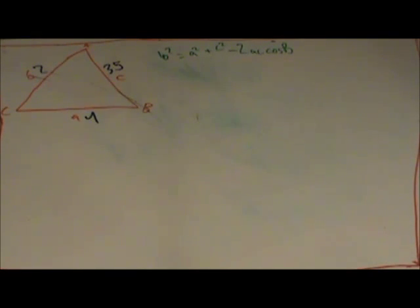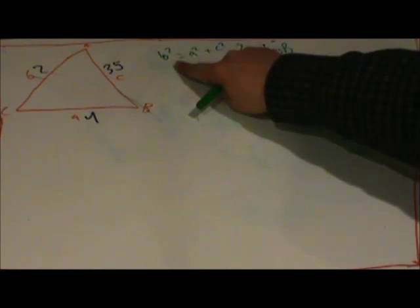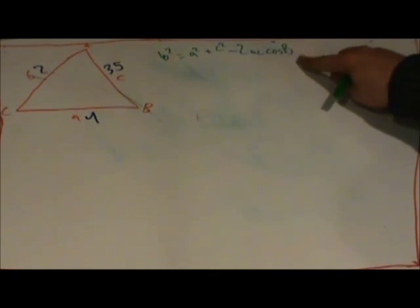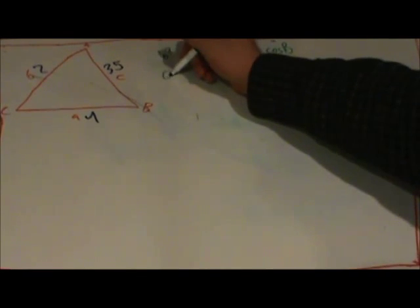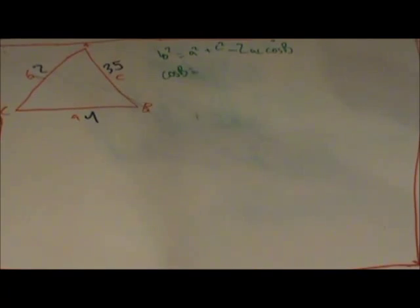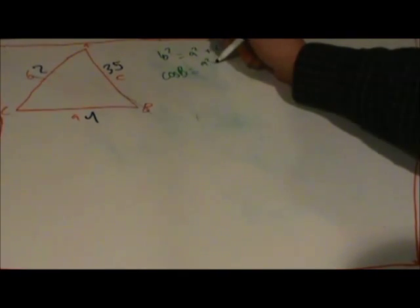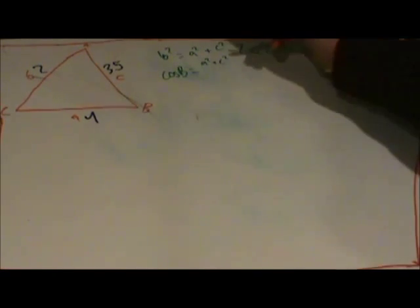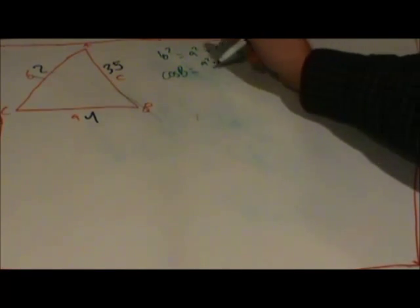They also have three alternate formulas, where instead of solving for the length of b here, you're solving for cosine b. That formula is cosine b equals a squared plus c squared minus b squared over 2ac.